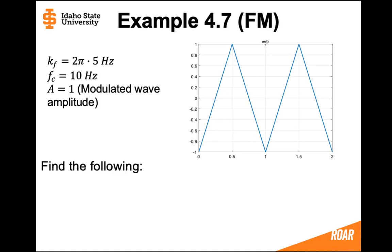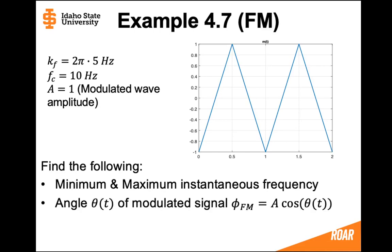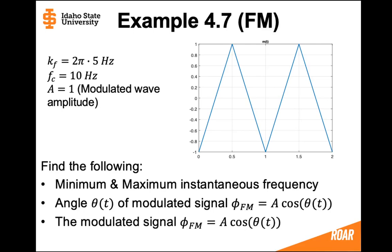We want to find the following: the minimum and maximum instantaneous frequency, the angle of the modulated signal — and remember, to find that angle we need to do an integral since this is frequency modulation — and then we'll find the modulated signal and the power of the modulated wave.